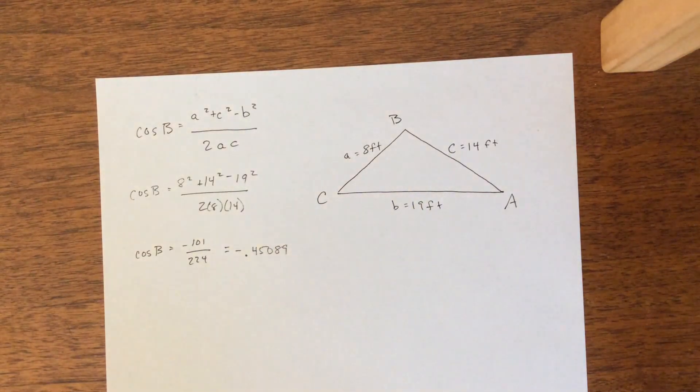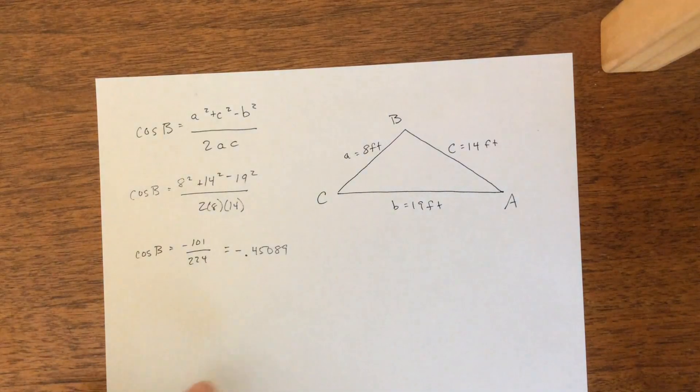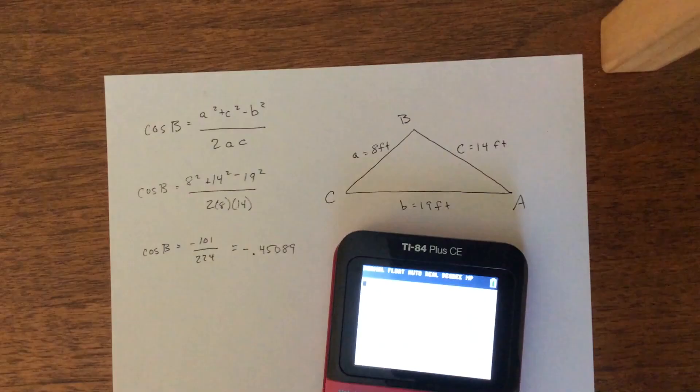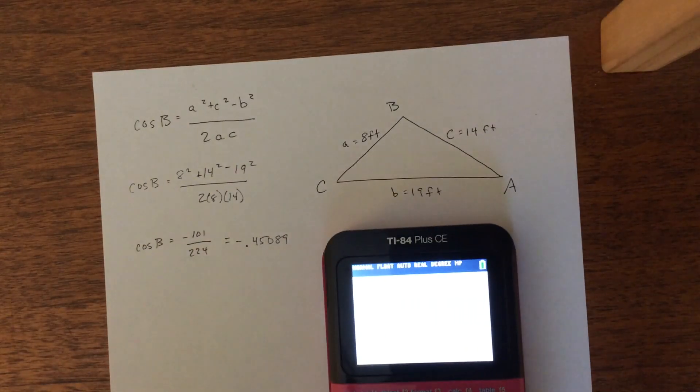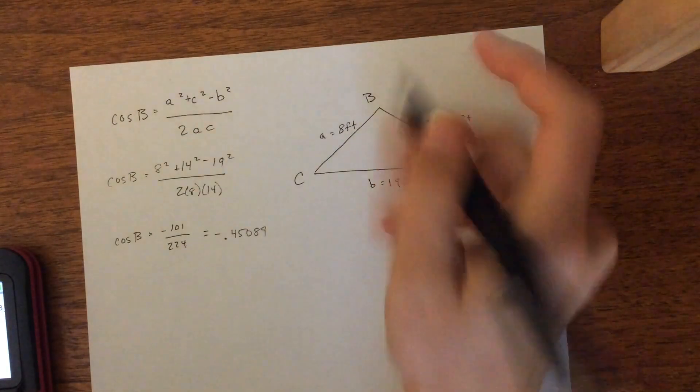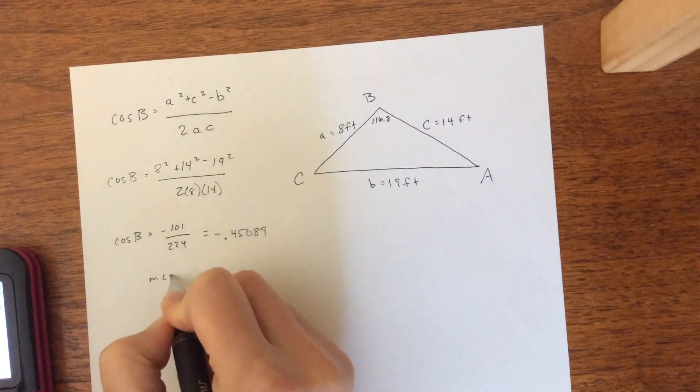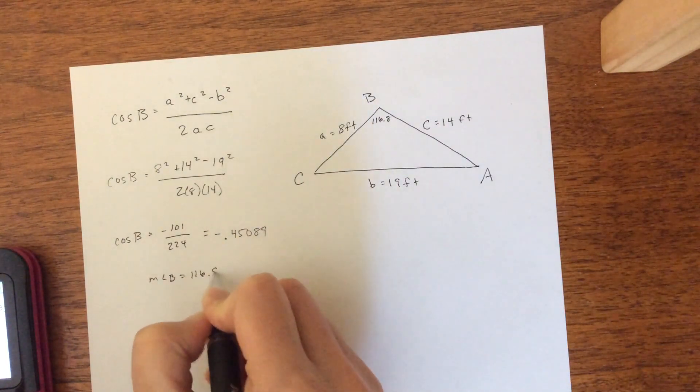And so if we have a negative cosine, we know our angle is going to be obtuse. So because we're solving for an angle measure, remember, we're going to use our inverse. So we do the inverse cosine of negative 0.45089. So we get 116.8. So the measure of angle B is 116.8 degrees.